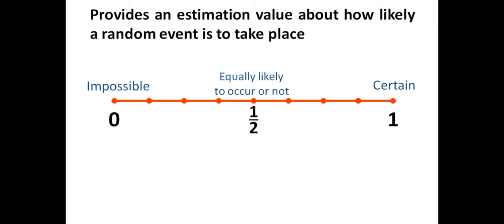Numbers allow us to precisely express the degree to which an event is likely to occur or not. So zero represents an event that cannot occur, whereas one represents an event that always occurs. The middle then, represented by one half, means that an event is as likely to occur as it is not to occur.